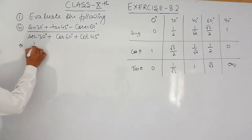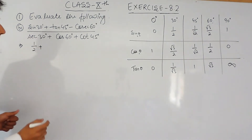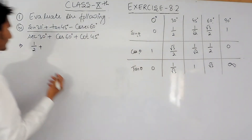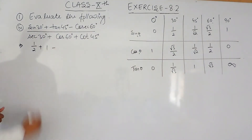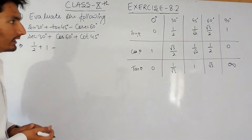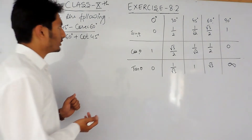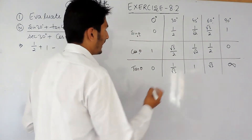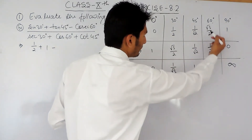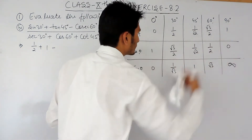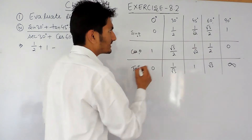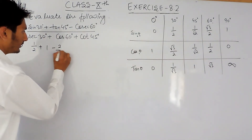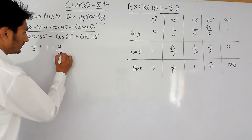Now first of all let's substitute the values. Sine 30 will be 1 by 2, plus tan 45 — tan 45 is 1 — and cos 60. We know that cos is the inverse of sin, and sin 60 is root 3 by 2, so cos 60 will be 2 by root 3.